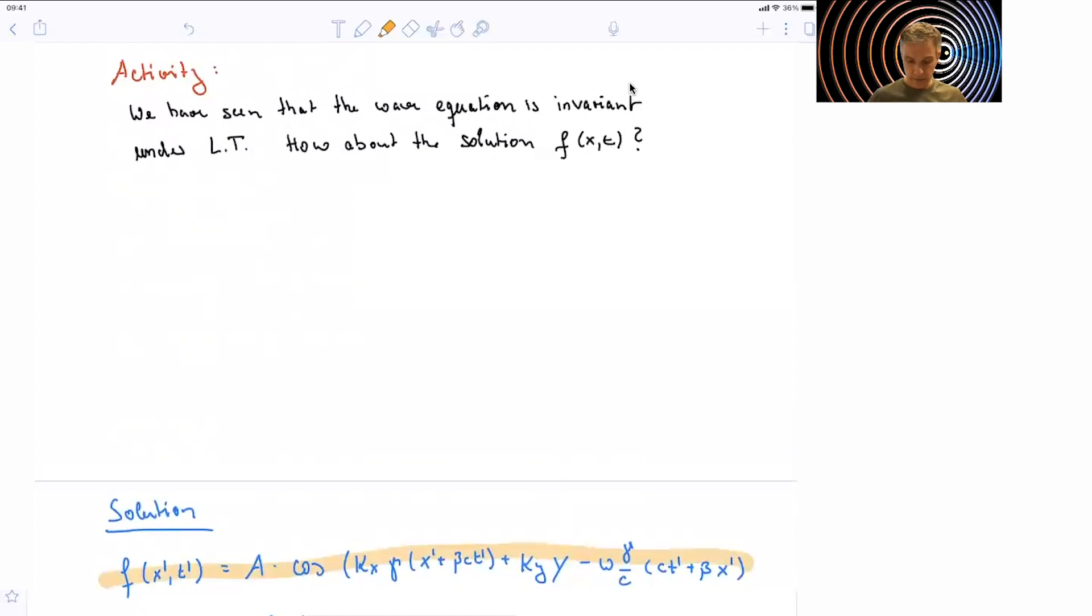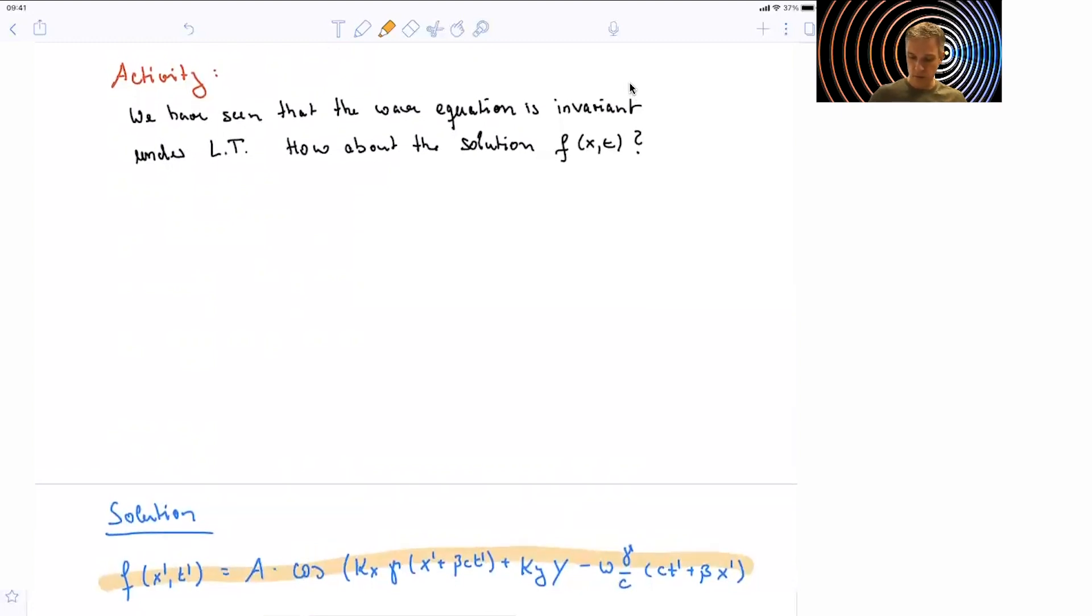kx gamma(x' + βct') plus no change in y direction as we look at Lorentz transformation in x direction. And then we have the transformation of the time axis. So now this looks very cumbersome or complicated.